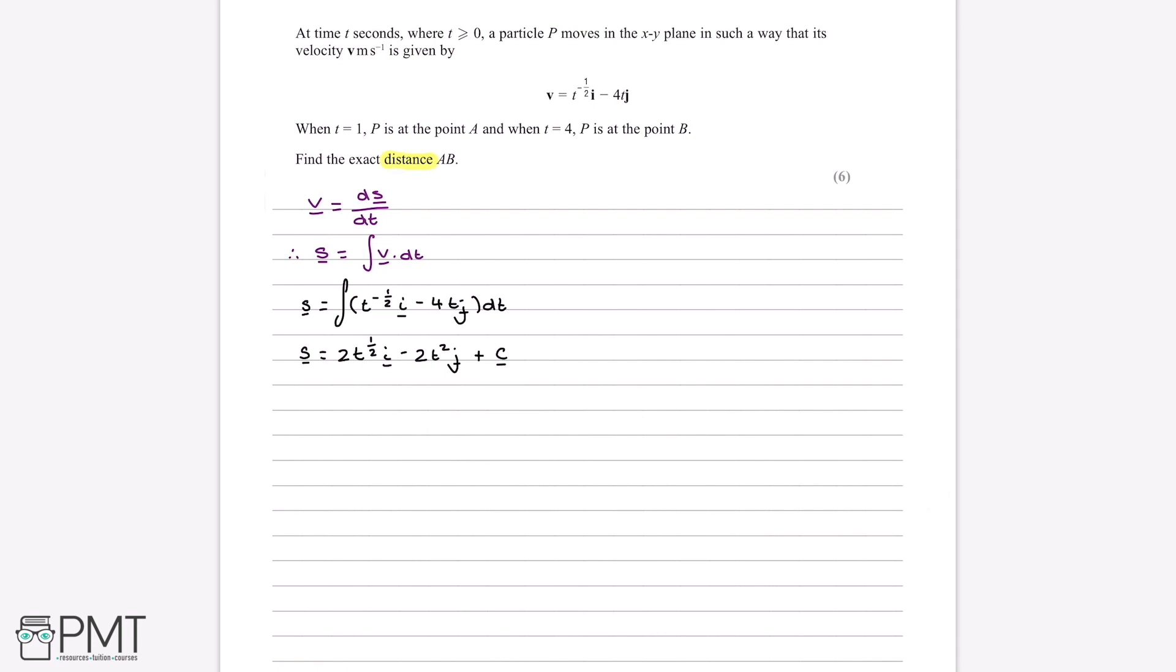So now, we're also told in the question that when t is equal to 1, p is at a, and when t is equal to 4, p is at b. So if we want to find the displacement at a, we just need to substitute in t equals 1. So if we do this, 2 times 1 to the power of a half i, minus 2 times 1 squared j, and then plus c, which we still don't know what it is. We find that an expression for the displacement at a is 2i minus 2j plus c.